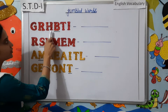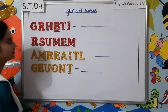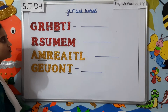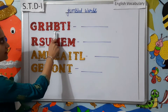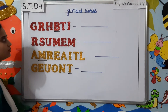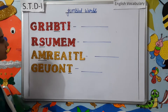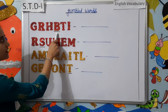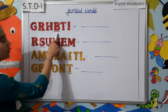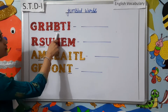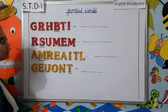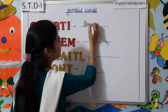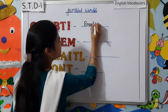G-R-H-B-T-I. Are you able to understand this word, students? No. So what we will do? We will arrange this jumbled word into the correct word. As you can see I have underlined B, that means we have to start the word with the letter B. So the correct word will be B-R-I-G-H-T. Bright.